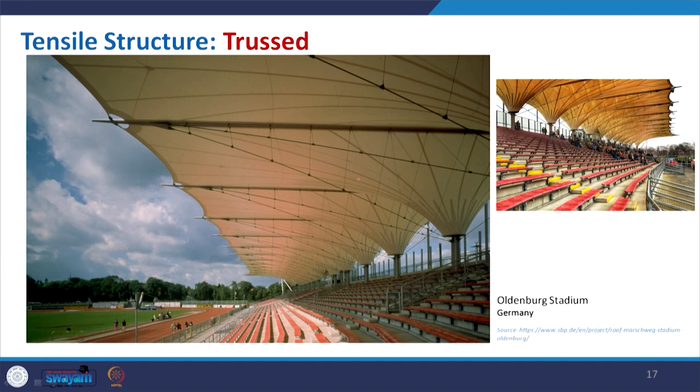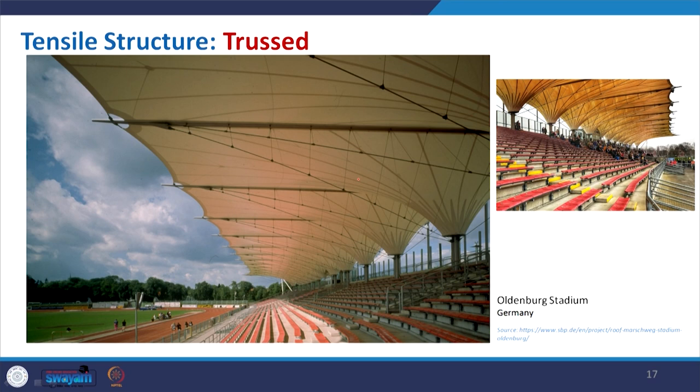Coming to tensile truss structures — where instead of state cable or suspension we use the truss. Truss is basically an arrangement of structural members in a triangular form which is much more effective to distribute the applied load and manage load transfer. Some members will take compression, some will take tension, and they balance it and maintain static equilibrium. That is very important for making a truss.